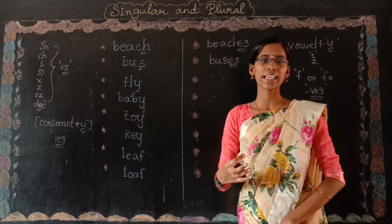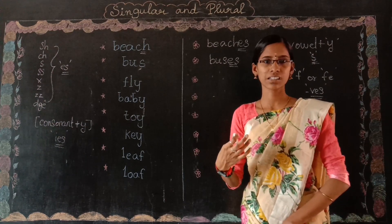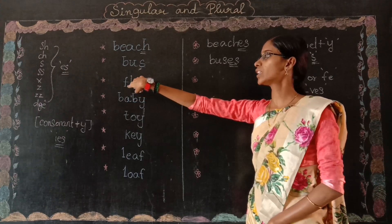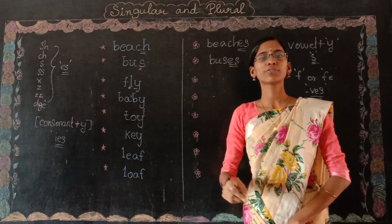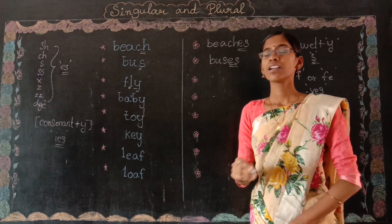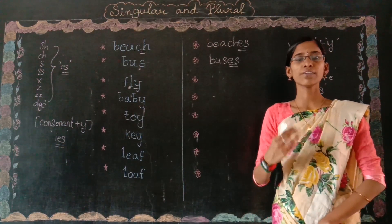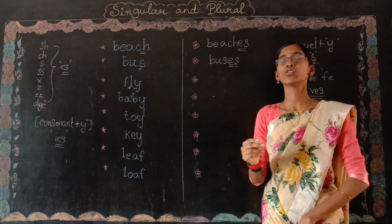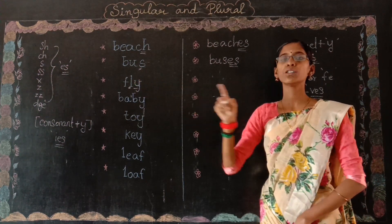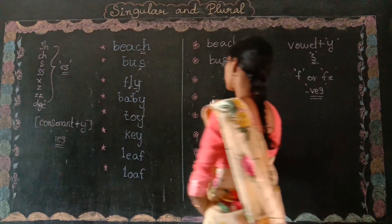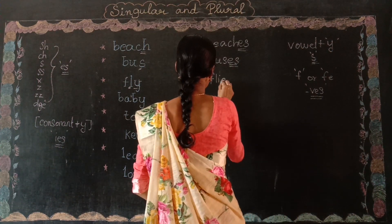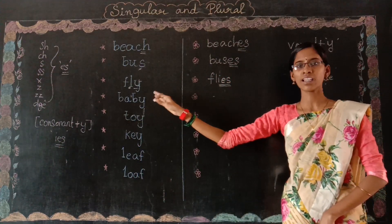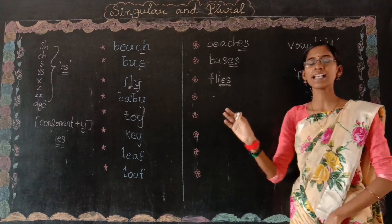Coming to the third word: 'fly.' Fly is a type of insect. It ends with Y, and before the Y is L, which is a consonant. So we apply the second rule — consonant plus Y: remove Y and add IES. The answer is 'flies.' In singular we say fly, and in plural we say flies.